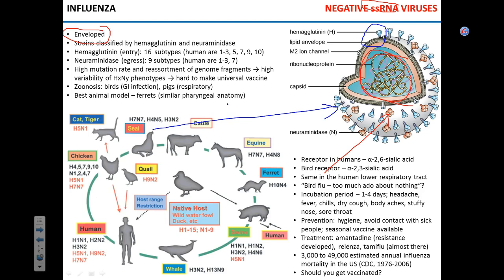There are 16 types of hemagglutinin and nine types of neuraminidase. When we call the virus H1N1, we mean hemagglutinin type 1 and neuraminidase type 1. Certain types of hemagglutinin and neuraminidase can infect humans, and not all influenza viruses can do so.